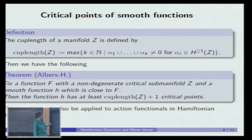And we can use this to show the existence of critical points. So one way to do it is just by looking at the homology and defining the cuplength of the manifold—that's the maximum number of homology classes in nonzero degrees such that the product is nonzero. And then we can prove a theorem saying that if we have a function F on some manifold that has a non-degenerate critical sub-manifold Z—so a sub-manifold of critical points—and in the normal direction I want them to be non-degenerate, and I choose a smooth function h which is in some sense close to F, then I can prove that the function h has at least—the number of critical points is at least the cuplength of this critical sub-manifold plus one.